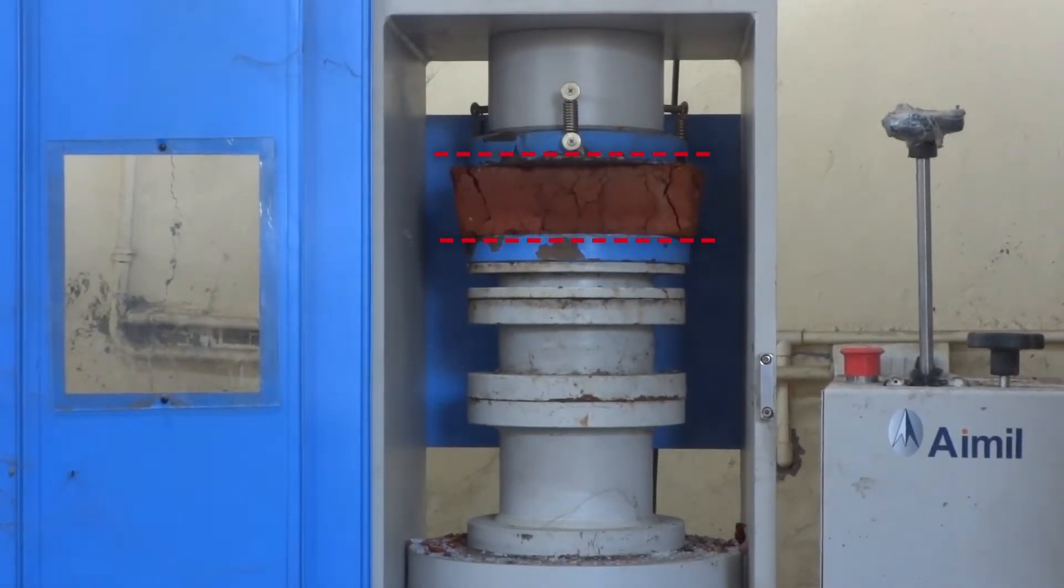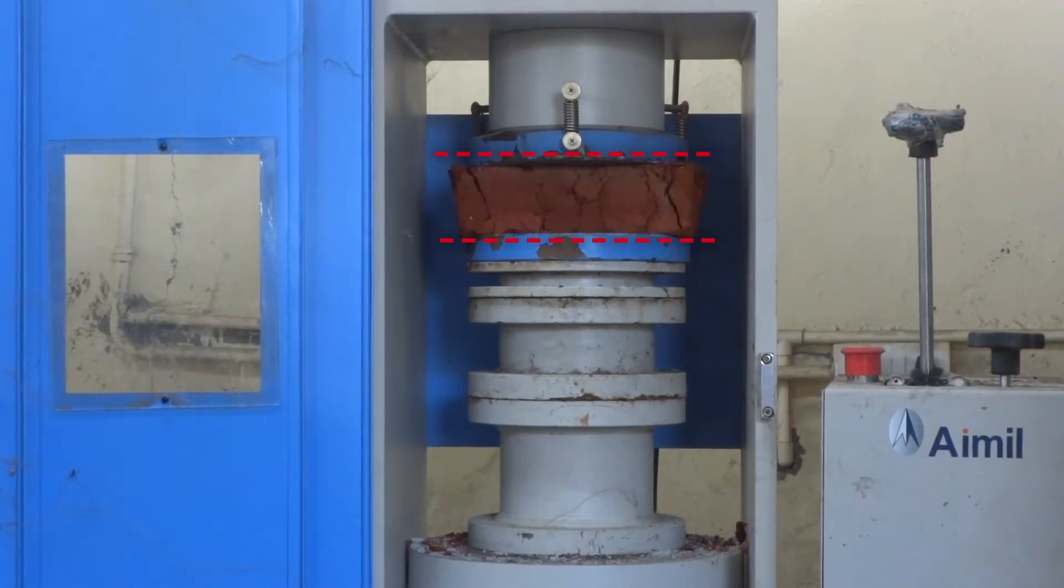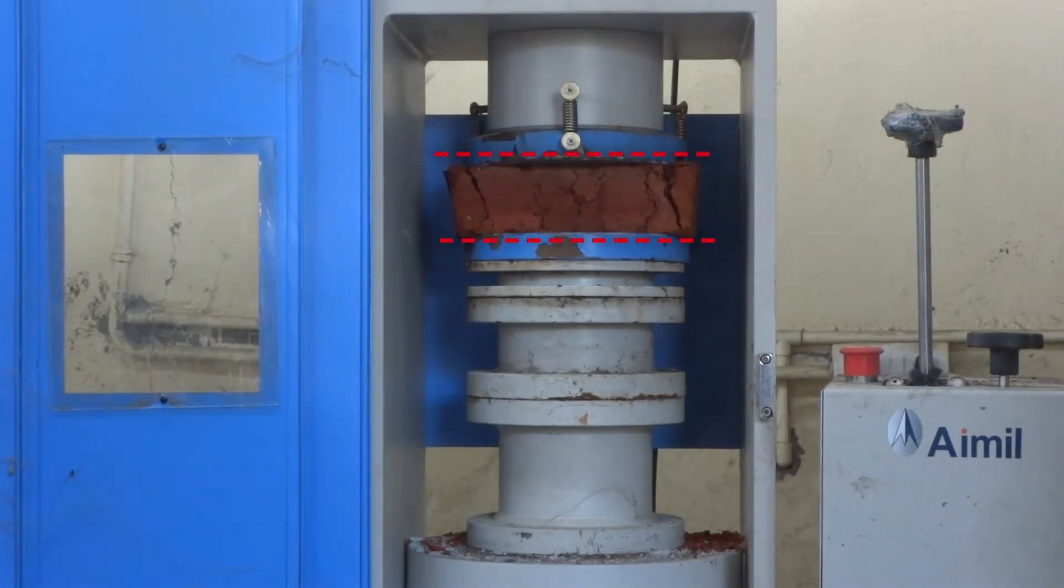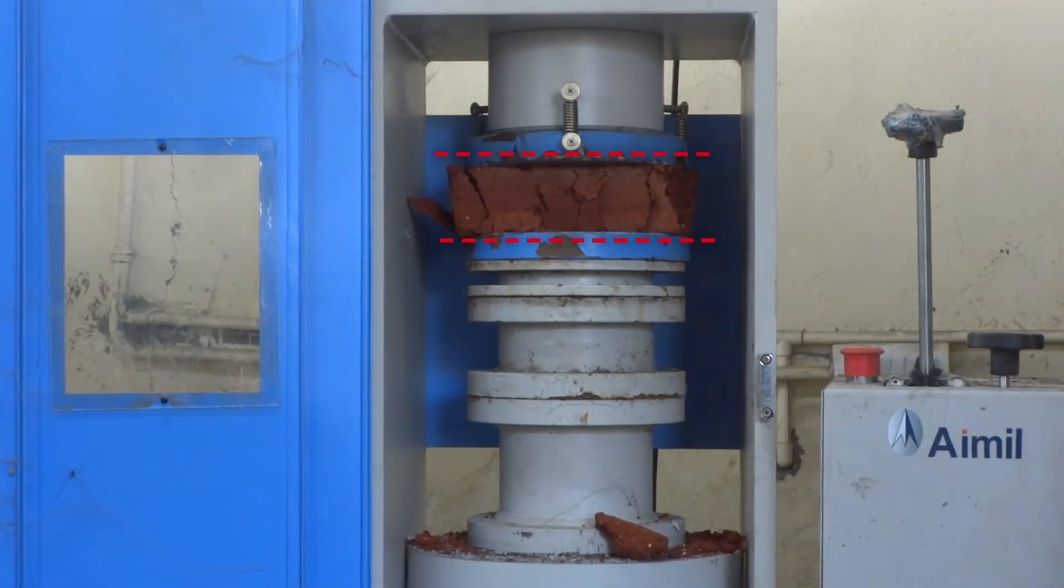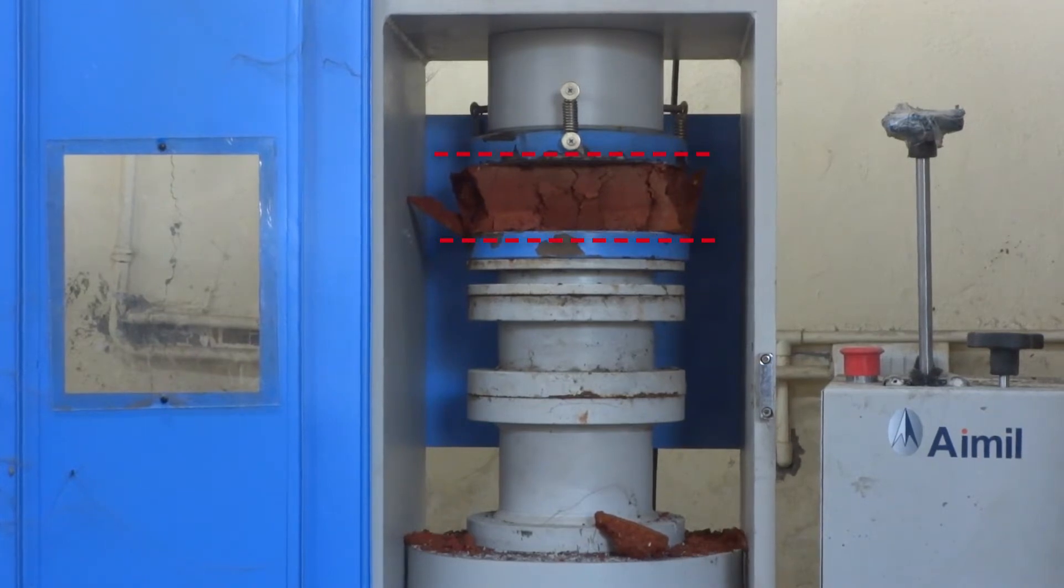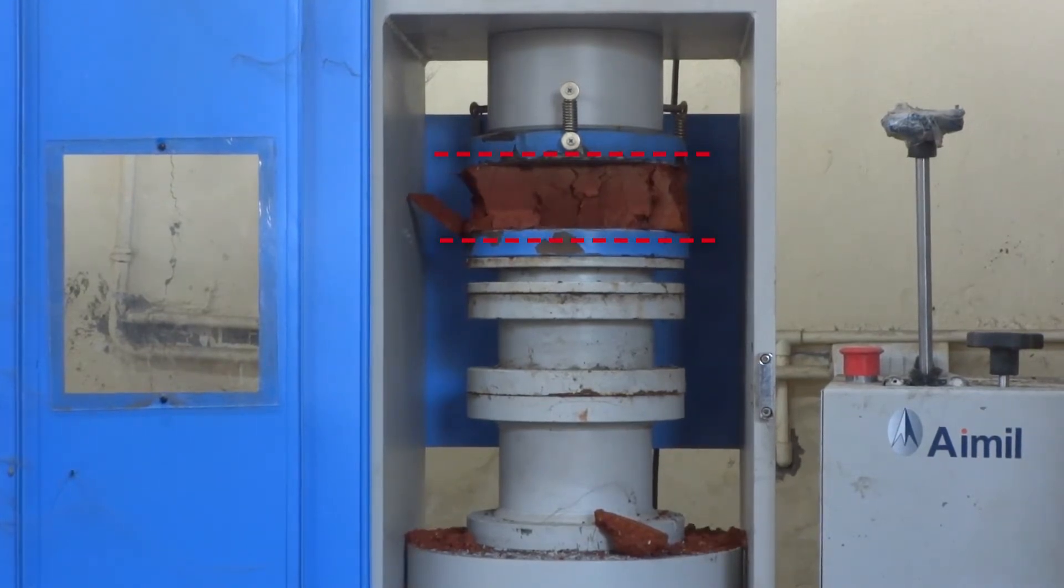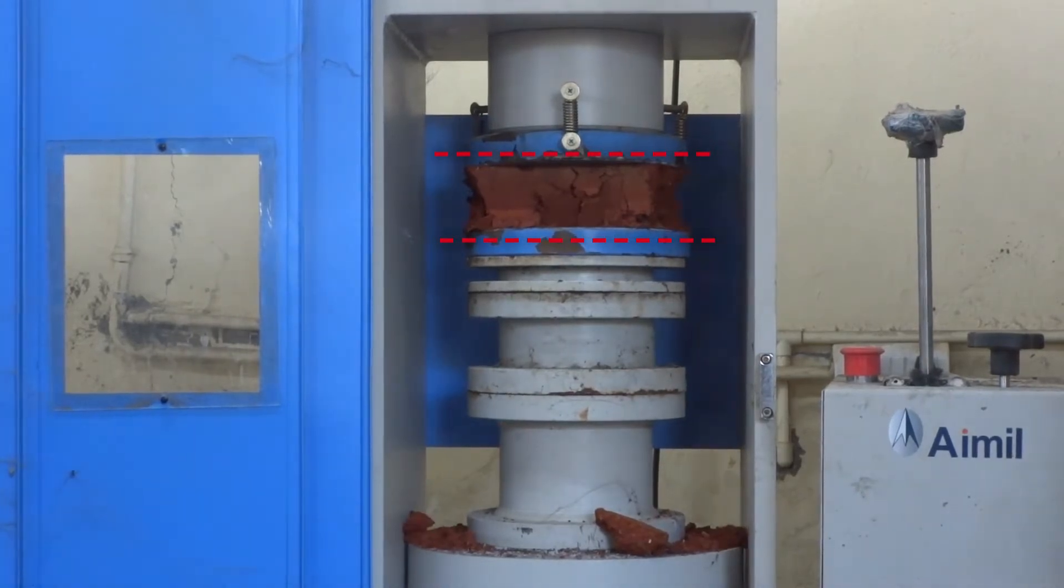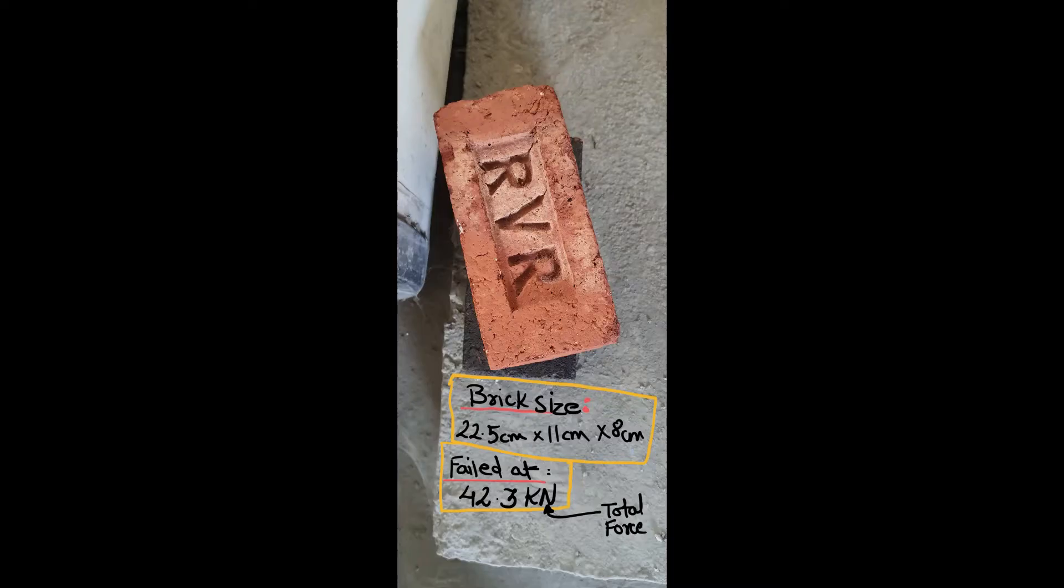As you can see the brick has huge cracks due to the load being applied on it. The conclusion is that this brick broke at a total load of 42.3kN.